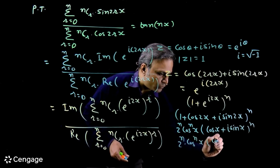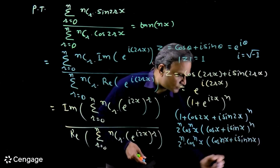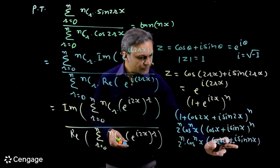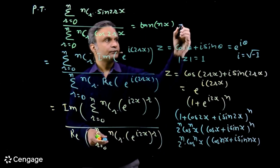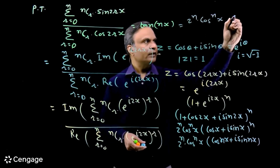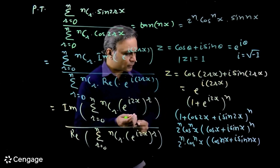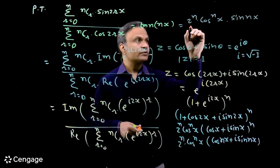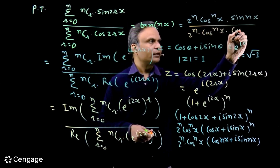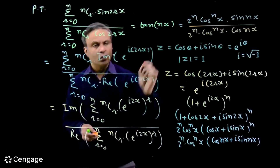Inside the bracket we have (cosx + i·sinx). Applying De Moivre's theorem, we get 2^n · cos^n(x) · (cos(nx) + i·sin(nx)). The imaginary part is 2^n · cos^n(x) · sin(nx) and the real part is 2^n · cos^n(x) · cos(nx). Therefore this ratio equals tan(nx).